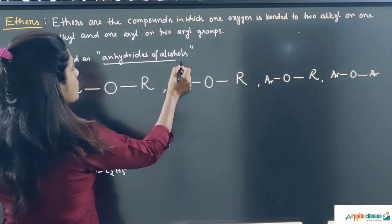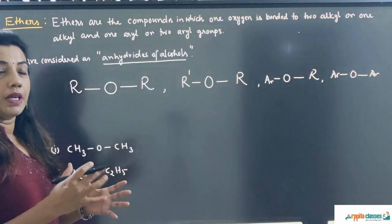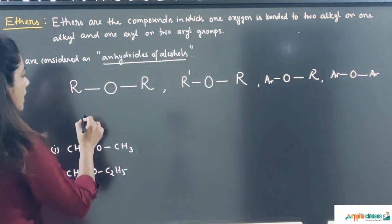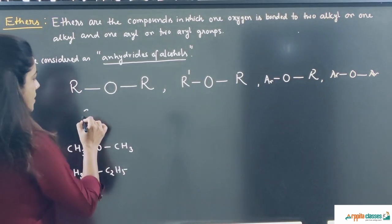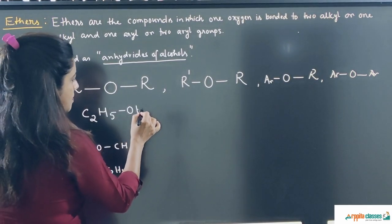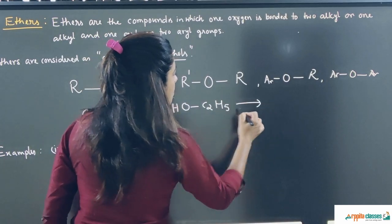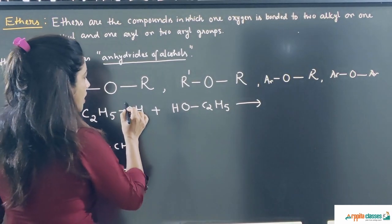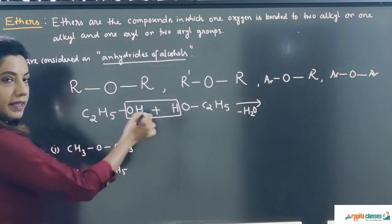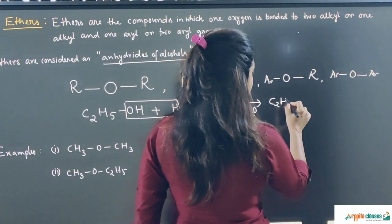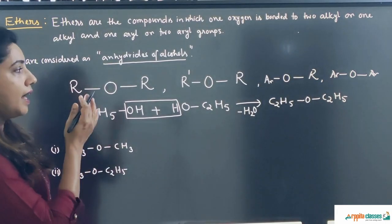Ethers are also considered to be anhydrides of alcohols. Why? Because dehydration of alcohols gives rise to ethers. For example, if I take two molecules of ethanol — C₂H₅OH and C₂H₅OH — and remove water (OH and H), combining the remaining parts gives C₂H₅OC₂H₅, which is an ether. Therefore ethers are known as anhydrides of alcohols.